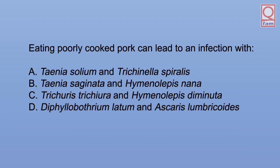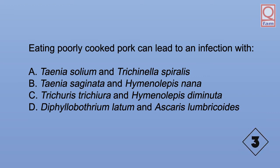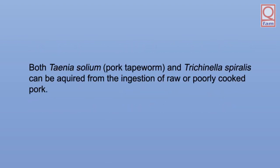Eating poorly cooked pork can lead to an infection with: A. Taenia solium and Trichinella spiralis. B. Taenia saginata and Hymenolepis nana. C. Trichuris trichiura and Hymenolepis diminuta. D. Diphyllobothrium latum and Ascaris lumbricoides. The answer is A: Taenia solium and Trichinella spiralis. Both the pork tapeworm and Trichinella spiralis can be acquired from the ingestion of raw or poorly cooked pork.